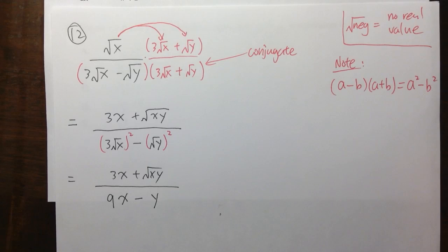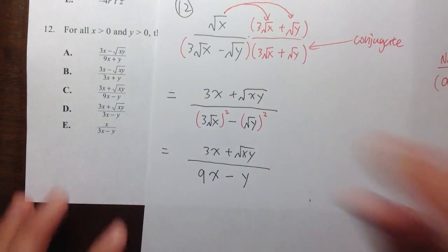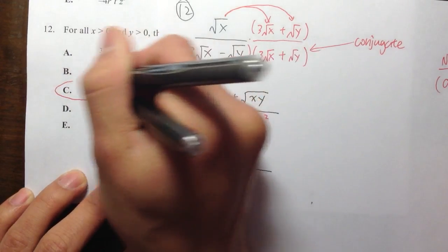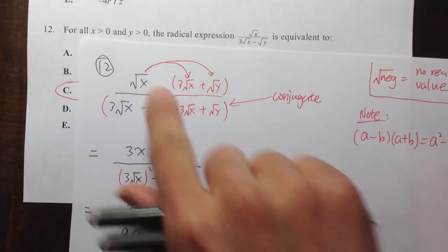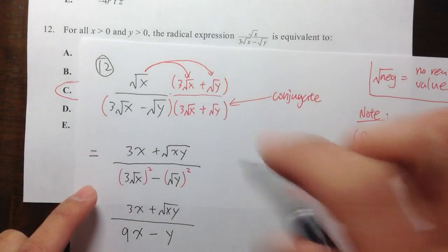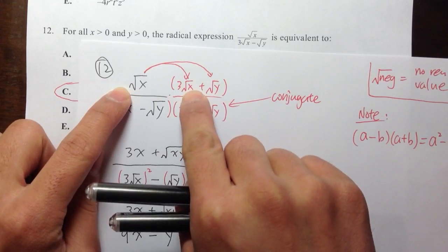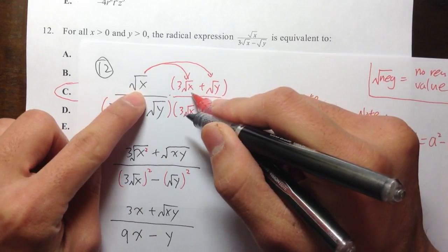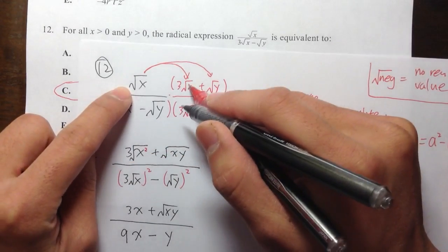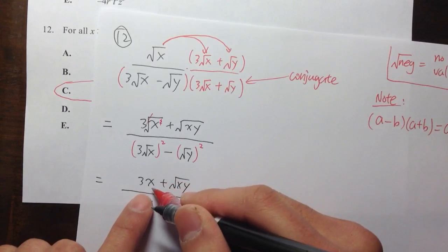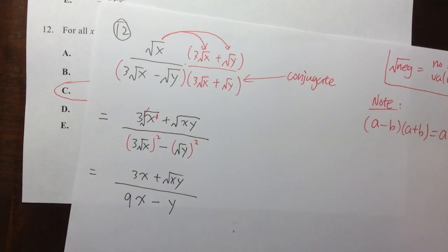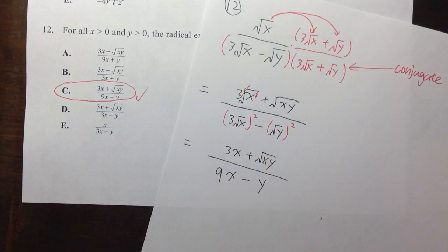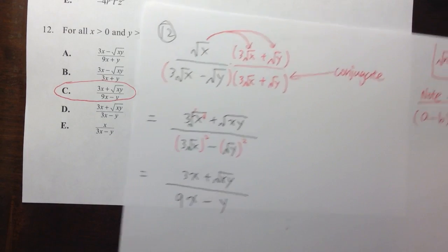Therefore the simplified expression is (3x + √(xy)) / (9x − y), which matches answer choice C. Just to clarify: √x · √x = √(x²) = x, because the square root and square cancel each other out. Be careful with the answer choices since many of them look very similar to each other. That's Question 12.